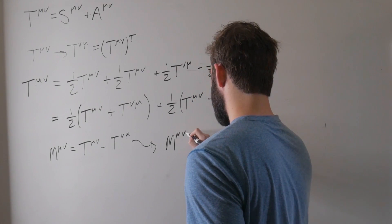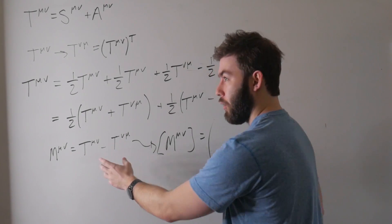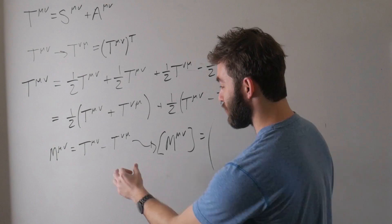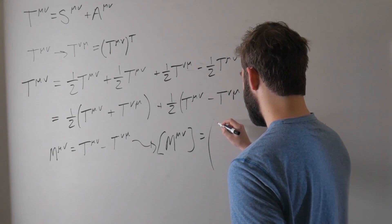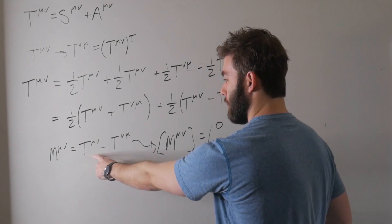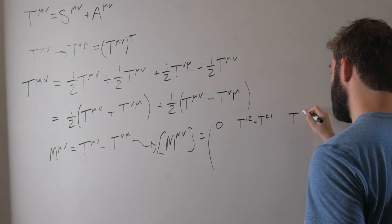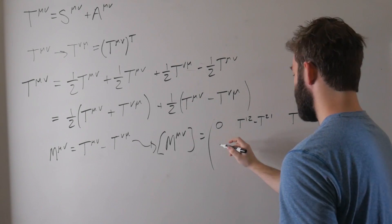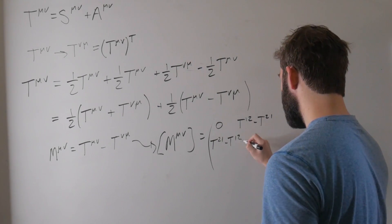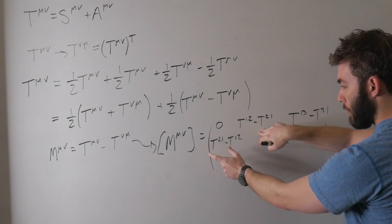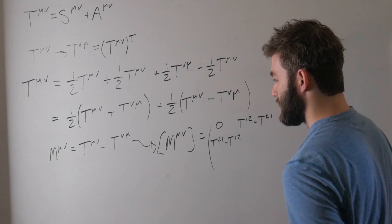So M^μν is equal to... And this is where we get our zero diagonal terms thrown in our face. Because if we have T_11 minus T_11, that's just going to be a zero. T_12 minus T_21, T_13 minus T_31. And let's just look at the next row. So this is going to be a T_21 minus T_12. And exactly this is the negative of this. If we multiply this term here by negative one, we would get this term here. So this is going to be an antisymmetric tensor.